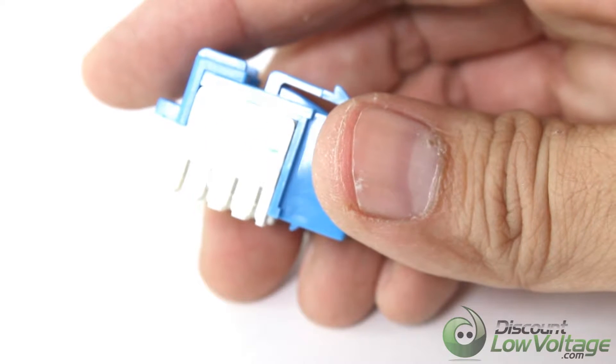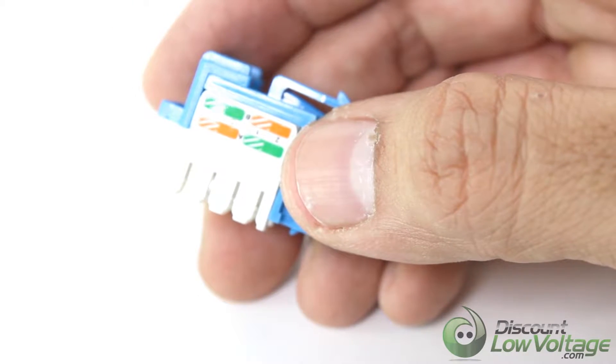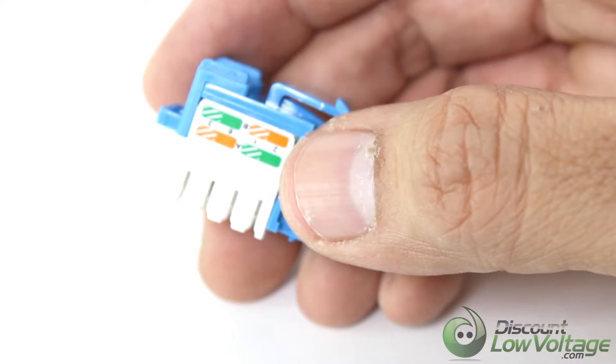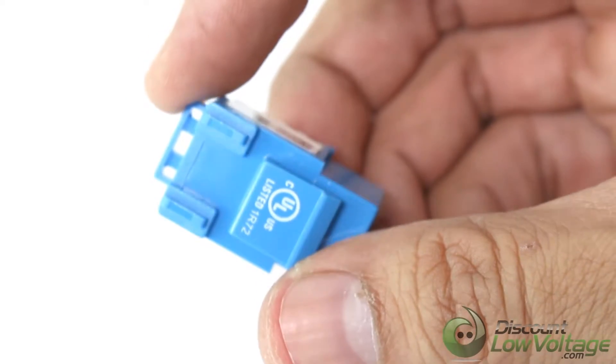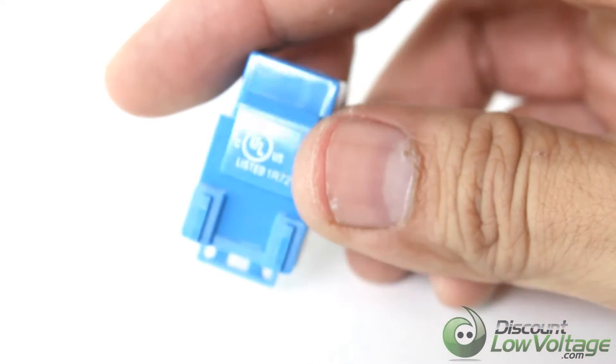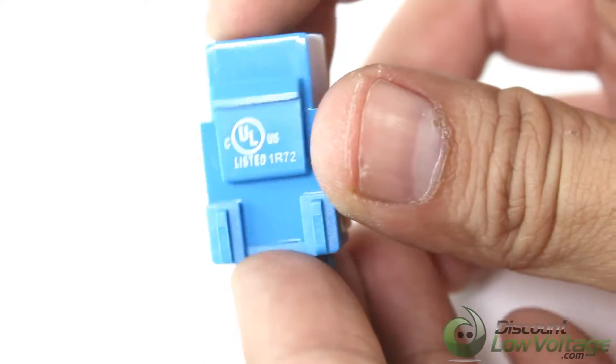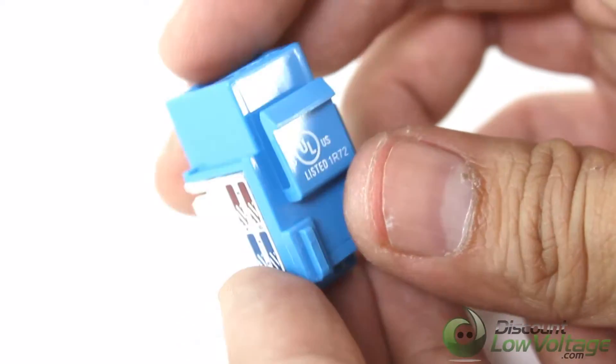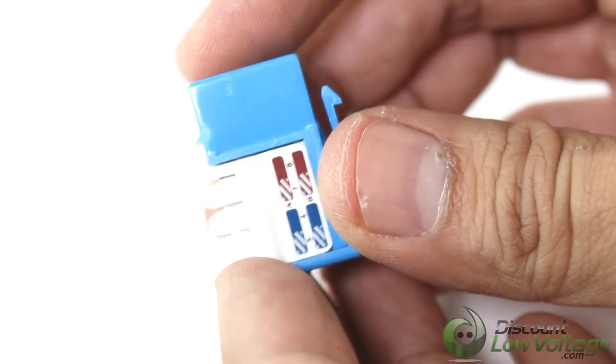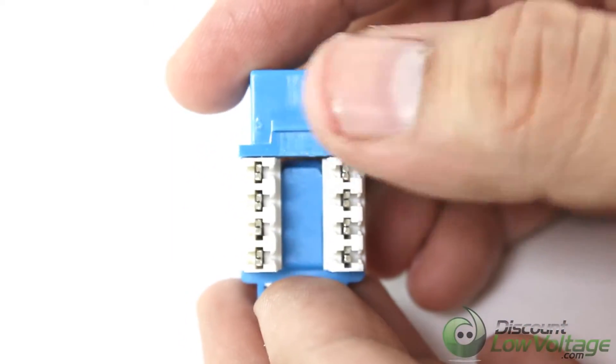The CAT-6 Keystone Jacks are designed to work in conjunction with DiscountLowVoltage wallplates and surface boxes or any standard keystone and angled multimedia wallplate or patch panel. Each keystone jack includes 110 type IDC termination with a strain relief cap.